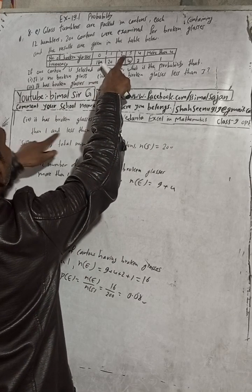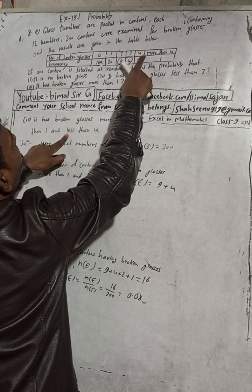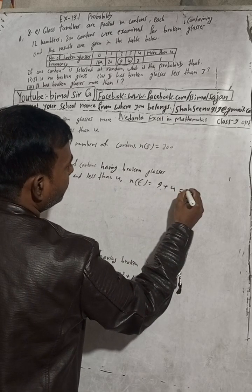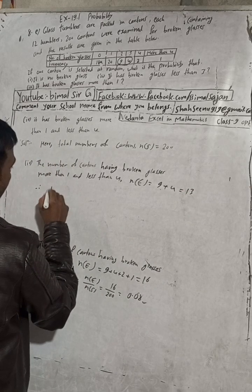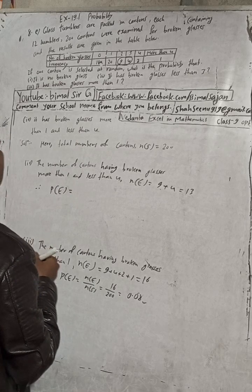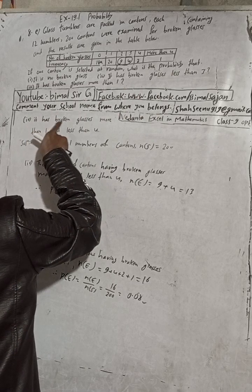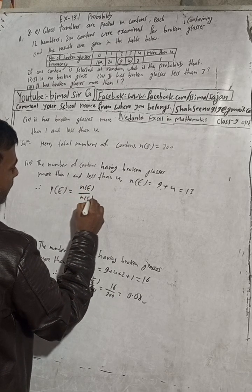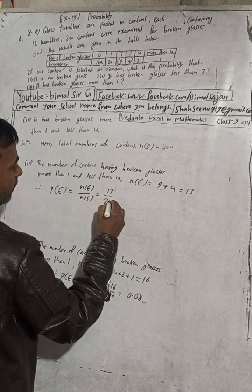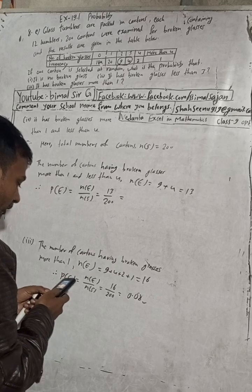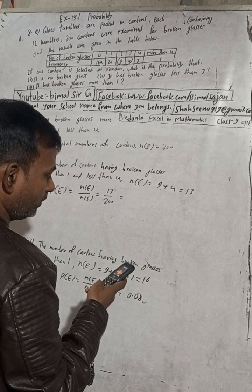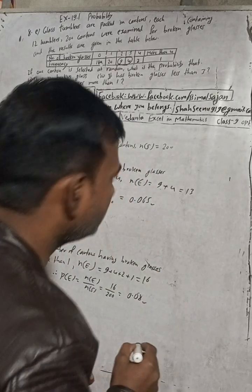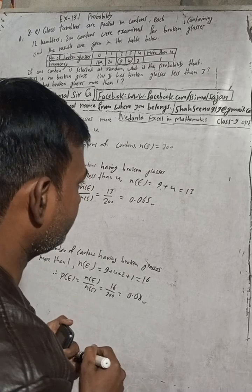More than one and less than four means we take counts 2 and 3: that is 9 + 4 = 13. Therefore P(E) = n(E) / n(S) = 13 / 200 = 0.065. The answer is 0.065.